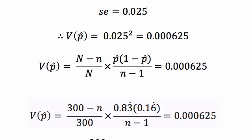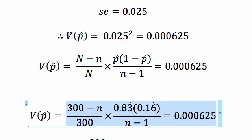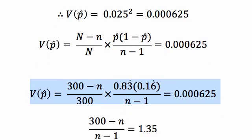We've got big N, we know that's still 300. P hat is 0.83 repeater. 1 minus P hat is 0.16 repeater. We're literally going to just rearrange this equation to try to find little n. I'll just scroll down.